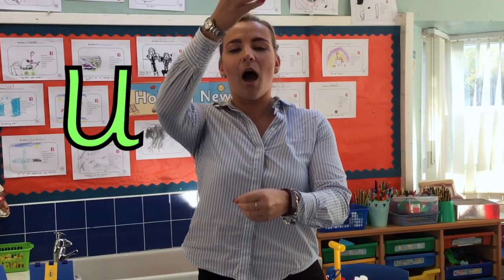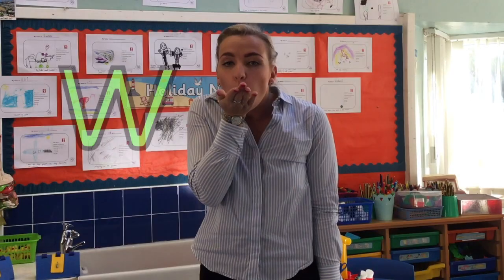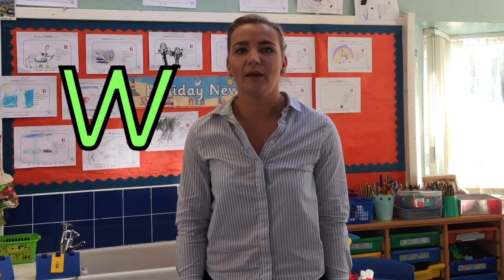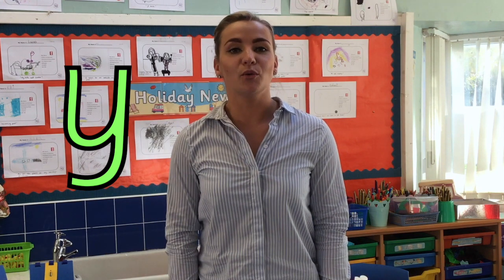U, U — up go umbrellas. V — Vick's van. W — the wild wind. X, X — take an X-ray. Y, Y — eat your yogurt. Z — bees buzzing.